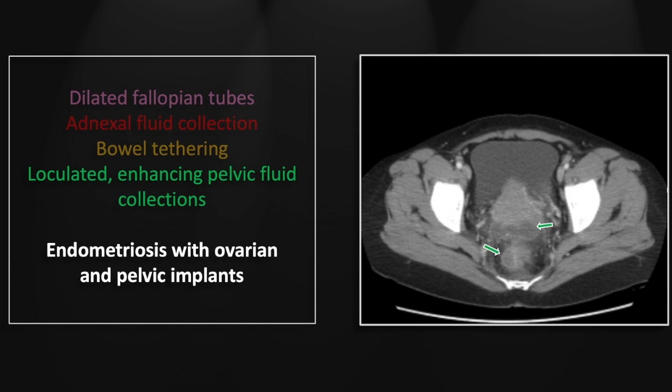Lastly, there are well-circumscribed hypodensities that could represent loculated fluid collections, or in this instance, endometrial implants.